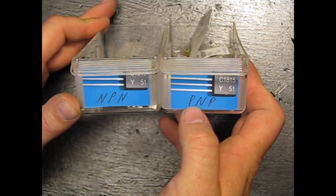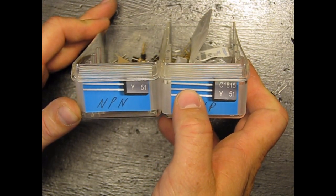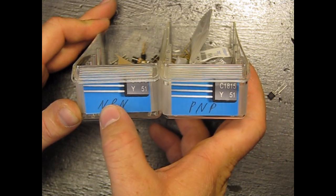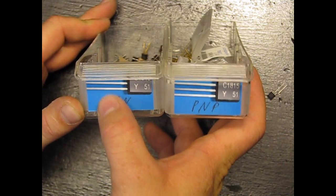So, on a PNP, you have positive, negative, positive. NPN would be negative, positive, negative.